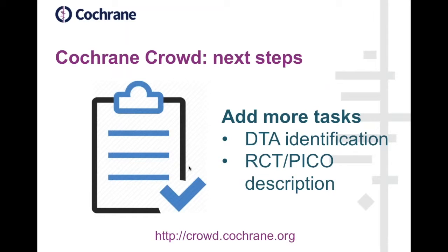What are the next steps for Cochrane Crowd? It's live now, so please do go and take a look if you haven't already. We're in beta at the moment and will remain in beta phase for the rest of the year, but it's already very functional, offering the RCT identification task to anyone who wants to help find those trials. In the next month or so, we'll be rolling out some new tasks — two of which are DTA identification. DTA stands for Diagnostic Test Accuracy, and very similar to the RCT identification task, we want to see whether as a community we're able to identify studies of diagnostic test accuracy. Those kinds of studies bring some new challenges, so it'll be really interesting to see how well that works.